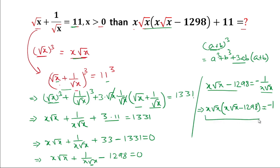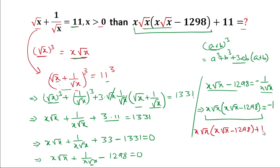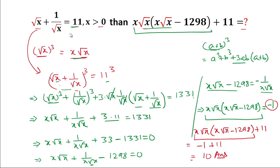Now substituting into the original expression: x·root(x)·[x·root(x) - 1298] + 11 = -1 + 11 = 10. So the answer is 10.